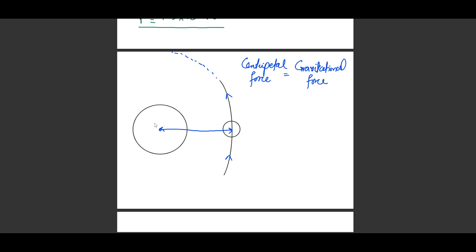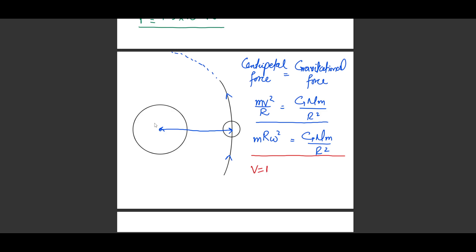We have two formulas for centripetal force. The first is mv²/r = GMm/r². The second uses angular velocity omega: mr ω² = GMm/r². You don't need to memorize both — since v = rω, replacing this in the first formula gives the second. You can remember just one and derive the other. Importantly, you must tell the examiner that the centripetal force is being provided by the gravitational attraction between the two masses.